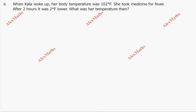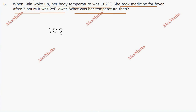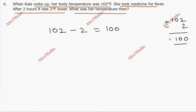Question number 6: When Kala woke up her body temperature was 102 degrees Fahrenheit. She took medicine for fever; after two hours it was 2 degrees Fahrenheit lower. What was her temperature then? First 102, now minus 2 is important. After subtraction: 2 minus 2 is 0, peri number sign plus. So her temperature was 100 degrees Fahrenheit.